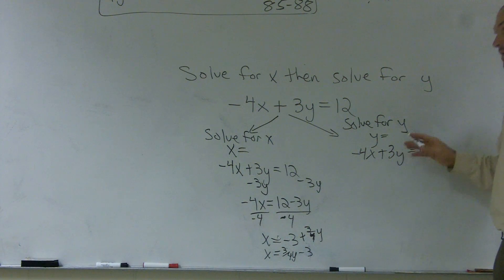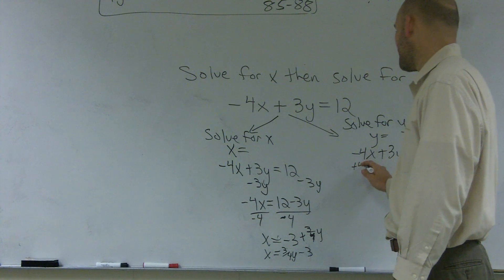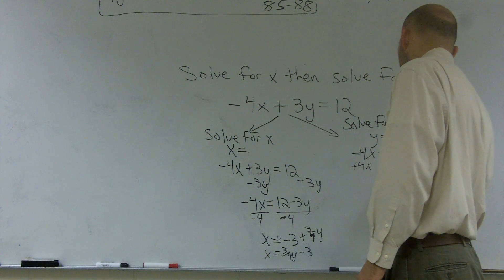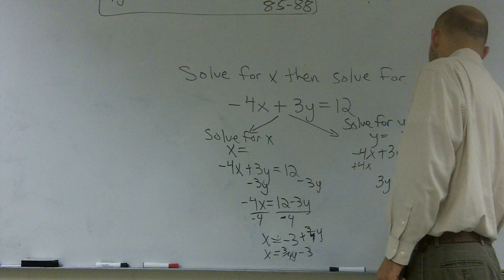Remember, I'm trying to get the y all by itself. So I add a 4x. 3y equals 12 plus 4x.